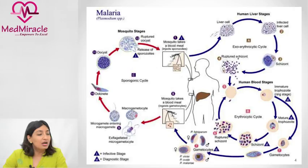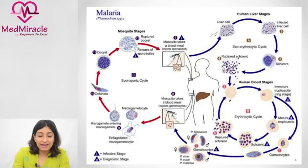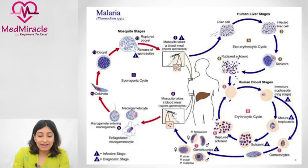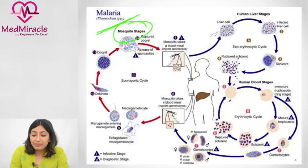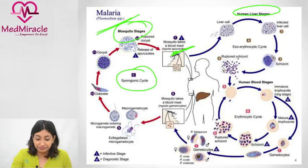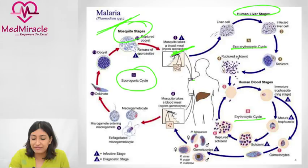The life cycle has two phases: sporogony in the mosquito and schizogony in humans. In humans, the infective stage is the sporozoite. The sporozoite enters and goes to the liver first — this is the exo-erythrocytic cycle — where liver cells become infected and lead to production of schizonts, which then rupture and release merozoites.